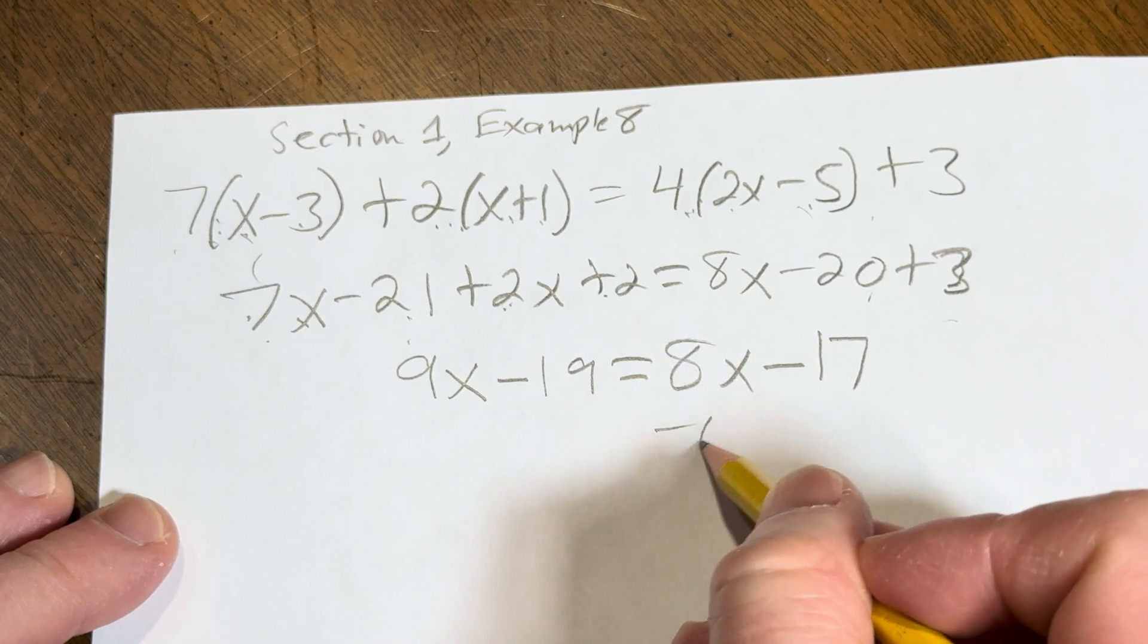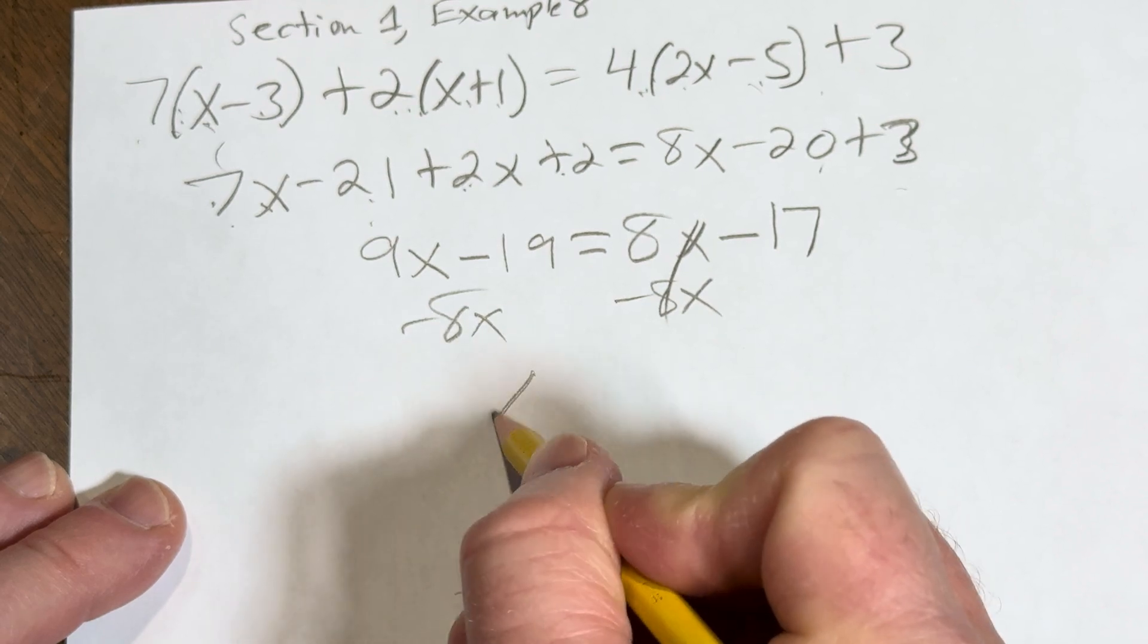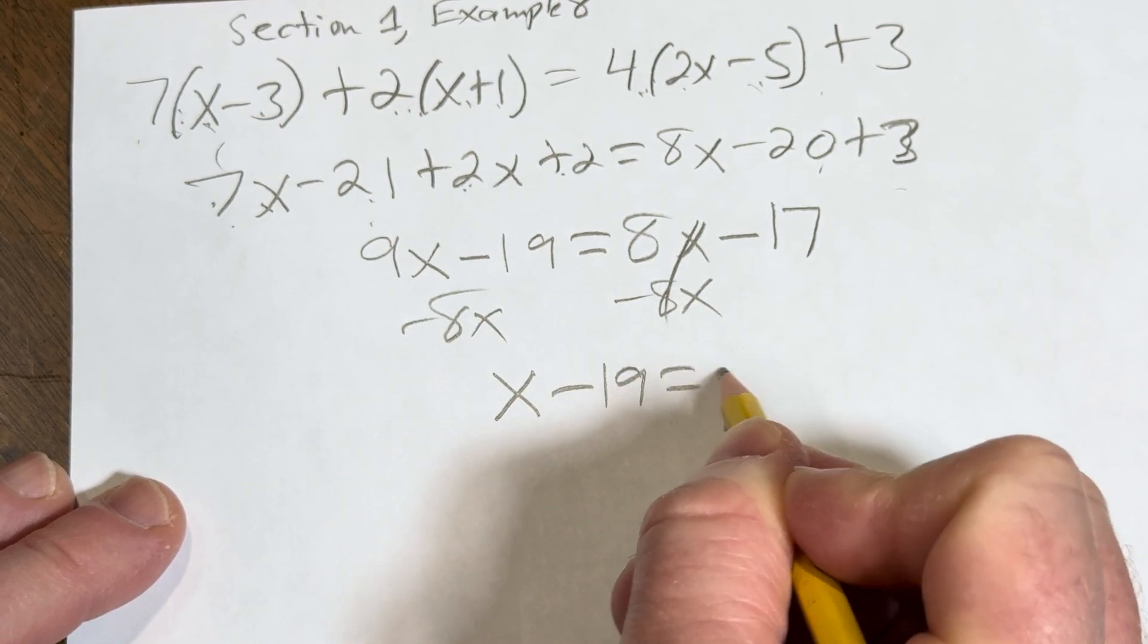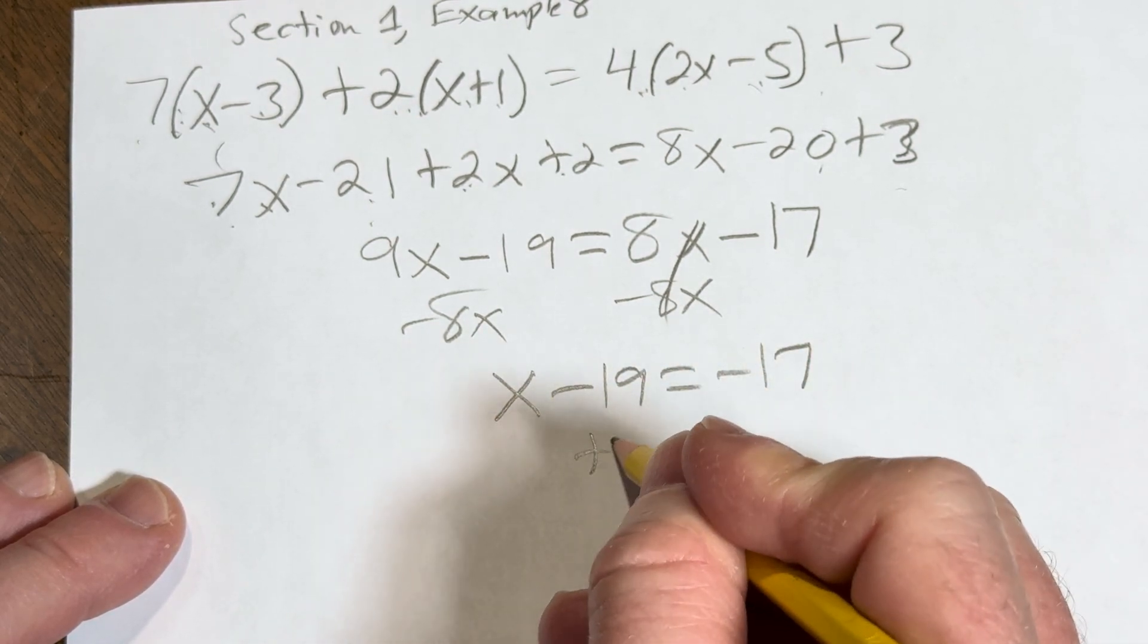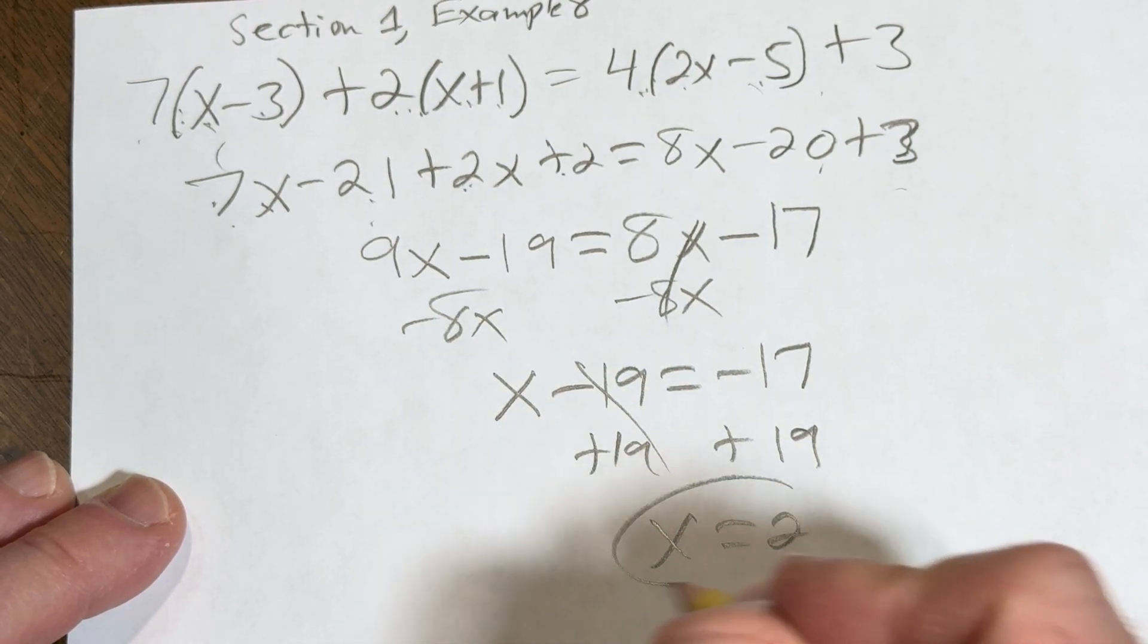Let's go ahead and subtract 8x. That leaves us with x minus 19 equals negative 17. And we can add 19 to both sides. That gives us x equals 2.